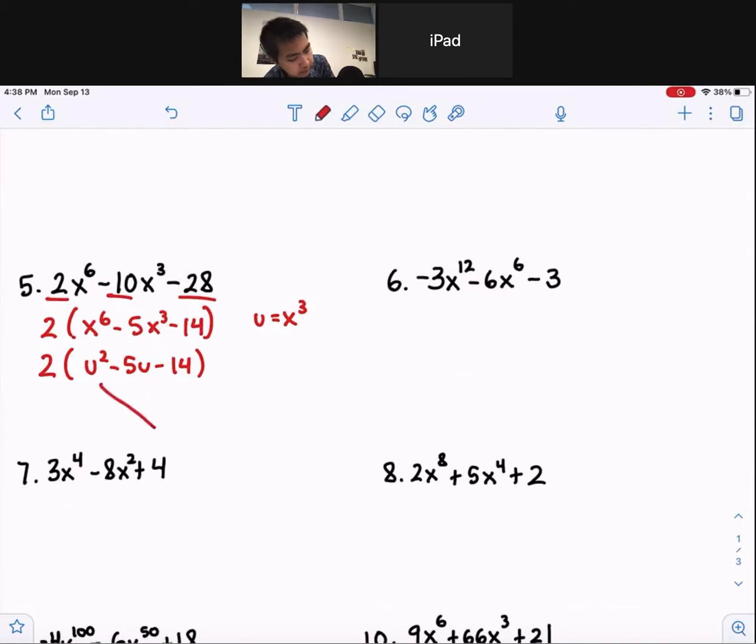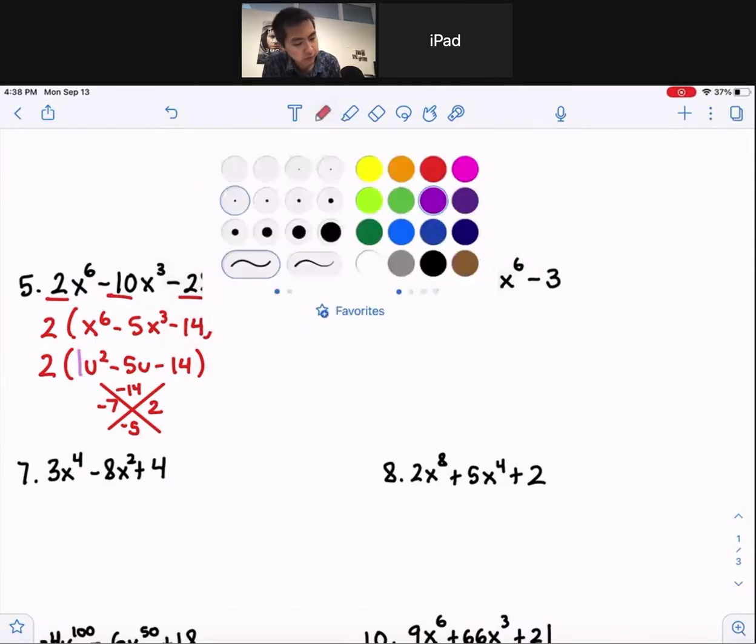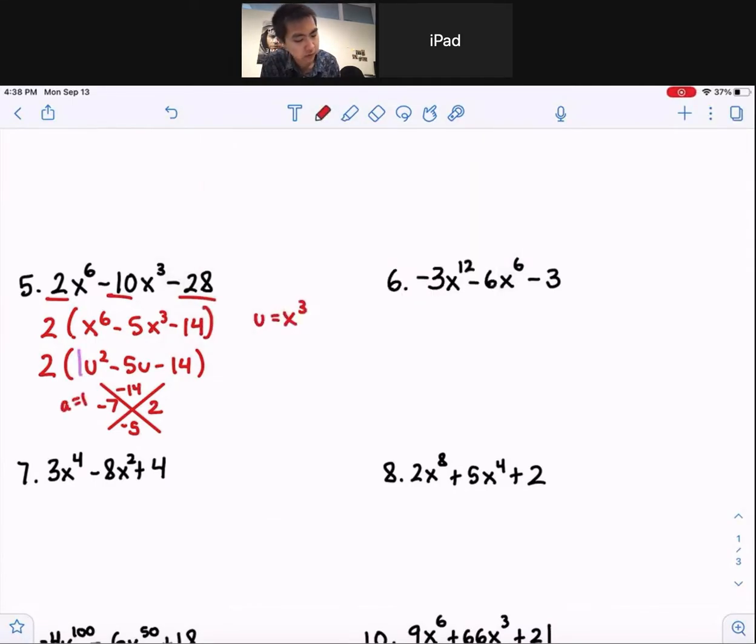So now let's do our x method, right? Negative 14 up top, negative 5 on the bottom. The two numbers are negative 7 and 2. And if you look at the coefficient in front of that u squared, it's 1. So since a is equal to 1, we can factor this by using these two, right?